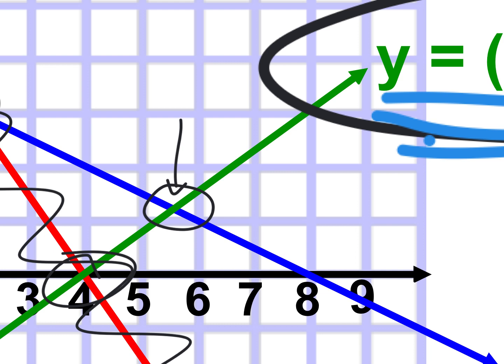Look at the choices: value, zero, minimum, maximum, intersect. You want the fifth choice — intersect — and you hit enter.